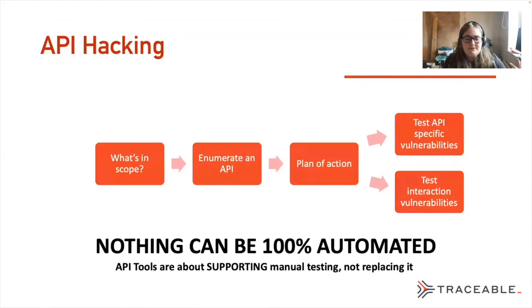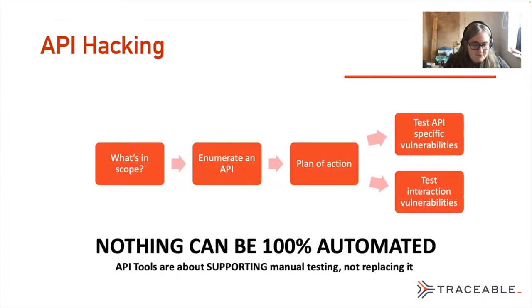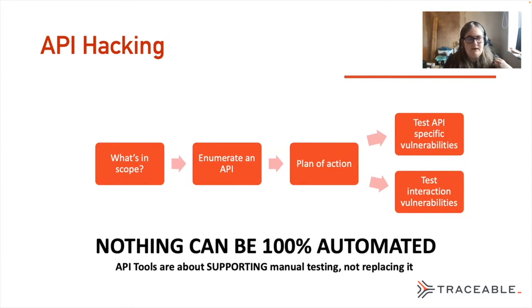Quite often what you see in scope are things like mobile apps, and mobile apps can connect to APIs in the back end. You can safely assume that API is in scope unless it explicitly mentions out of scope. When I do all my testing, I'm always thinking am I staying in scope — am I doing right by my customer?